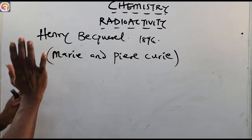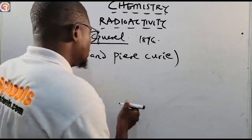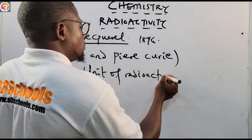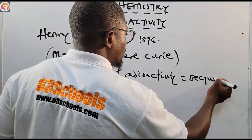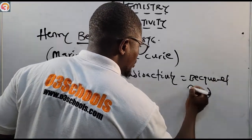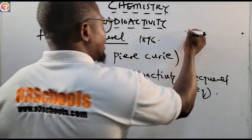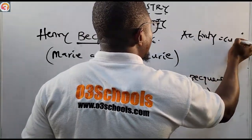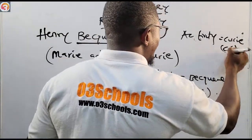The unit of radioactivity is the becquerel, abbreviated Bq. This is the unit of radioactivity. However, the unit of activity is the curie. Please take note of that — the unit of activity is the curie, while the unit of radioactivity is the becquerel.